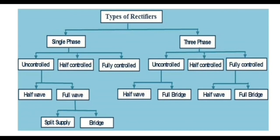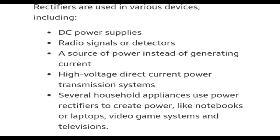Rectifiers can be classified into single-phase and three-phase types. In single-phase rectifiers, there are uncontrolled, half-controlled, and fully controlled types. These can also be half-wave or full-wave. Full-wave rectifiers are connected either as a split-supply or a bridge configuration. In three-phase rectifiers, there are similarly uncontrolled half-wave and full-bridge types, as well as fully controlled half-wave and full-bridge configurations. Different devices are used to rectify in each case.